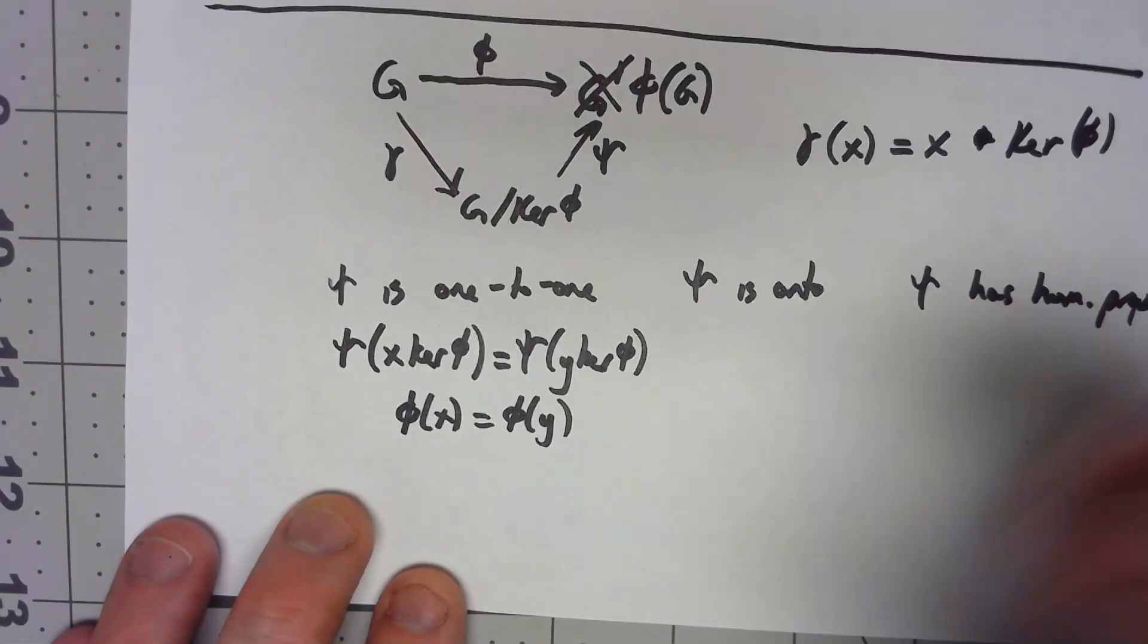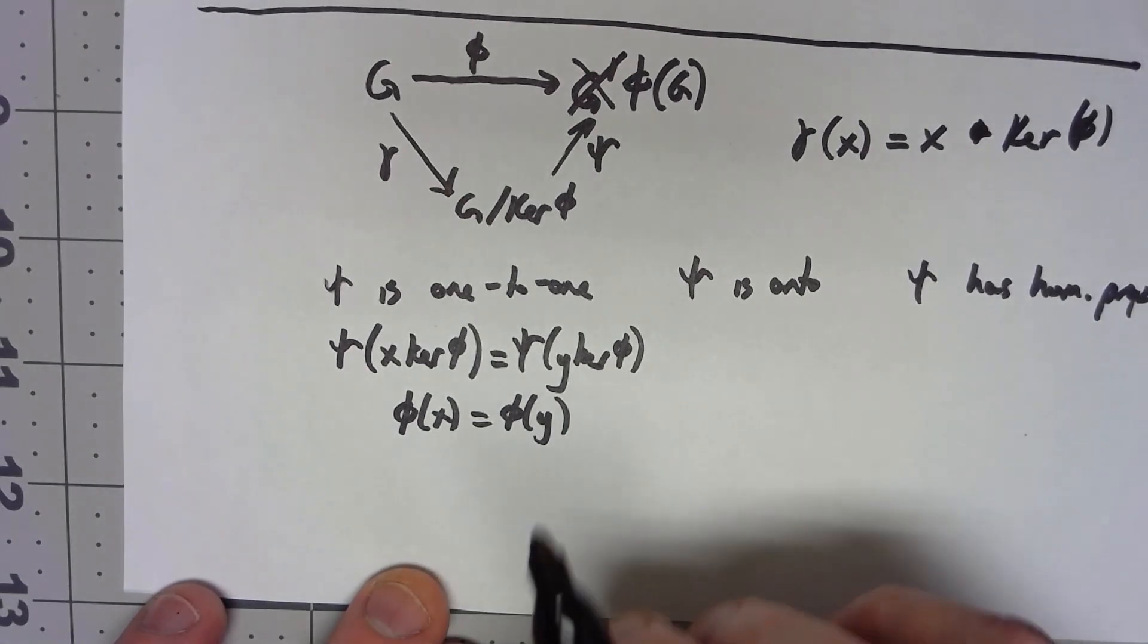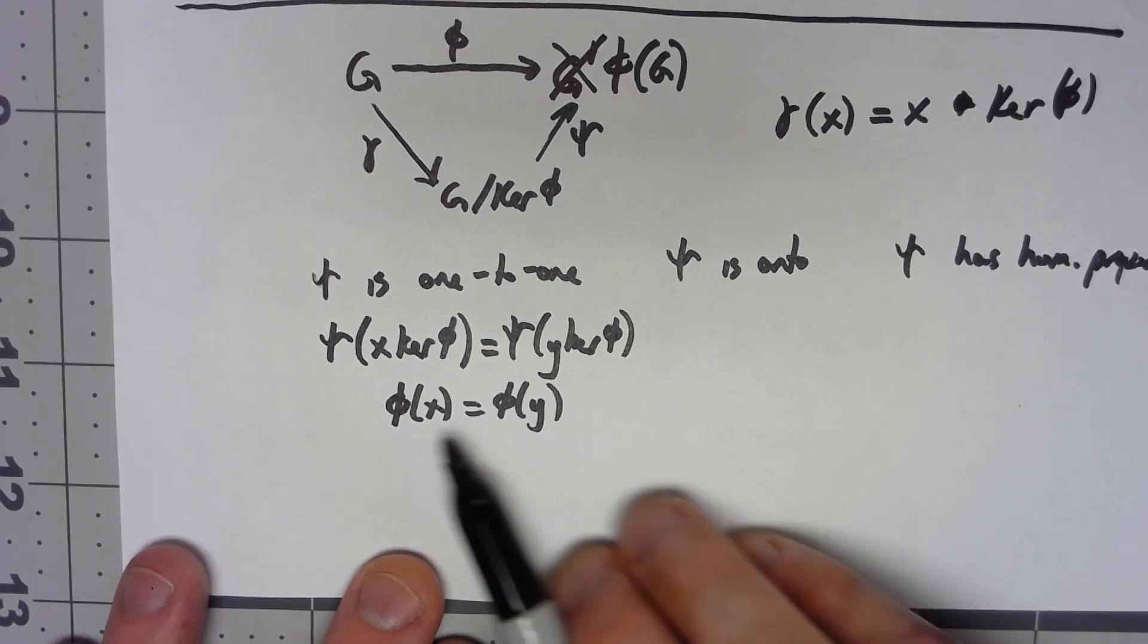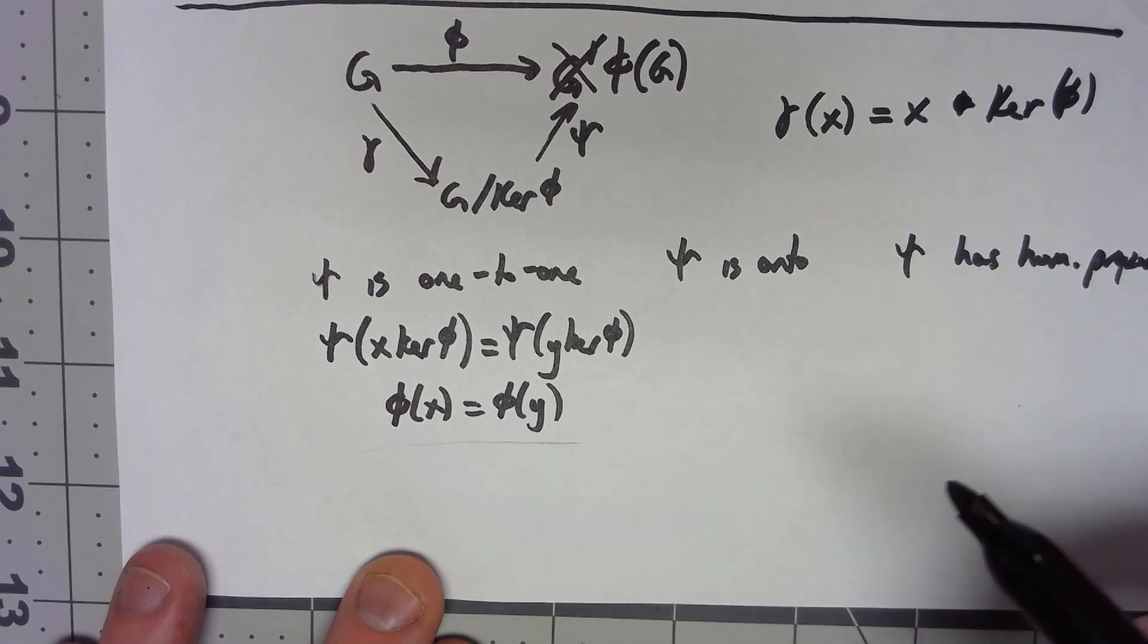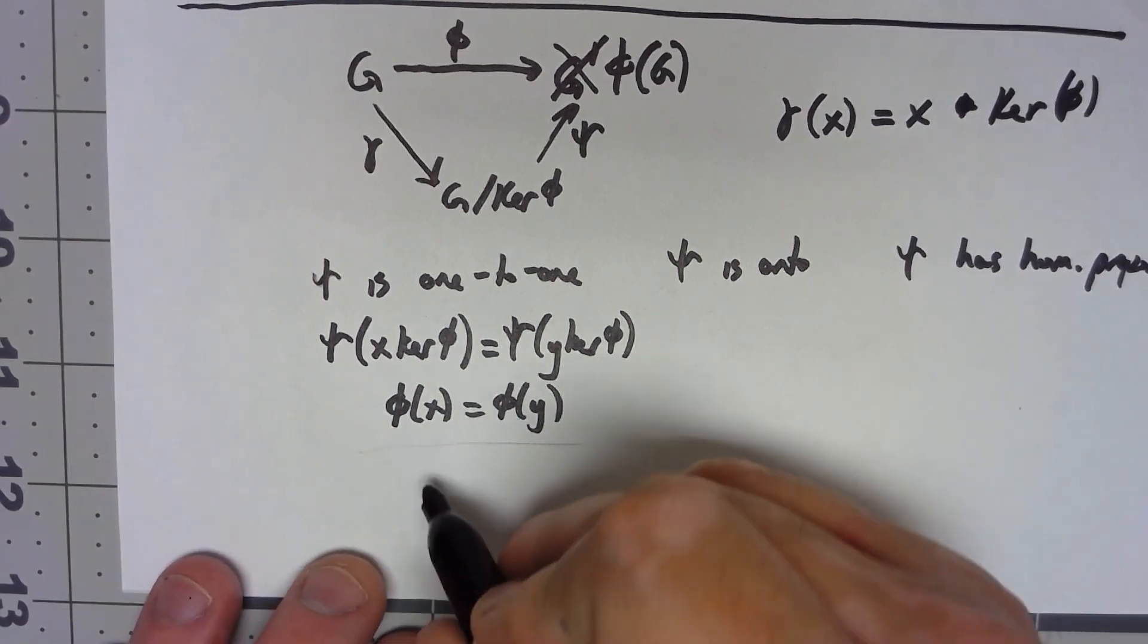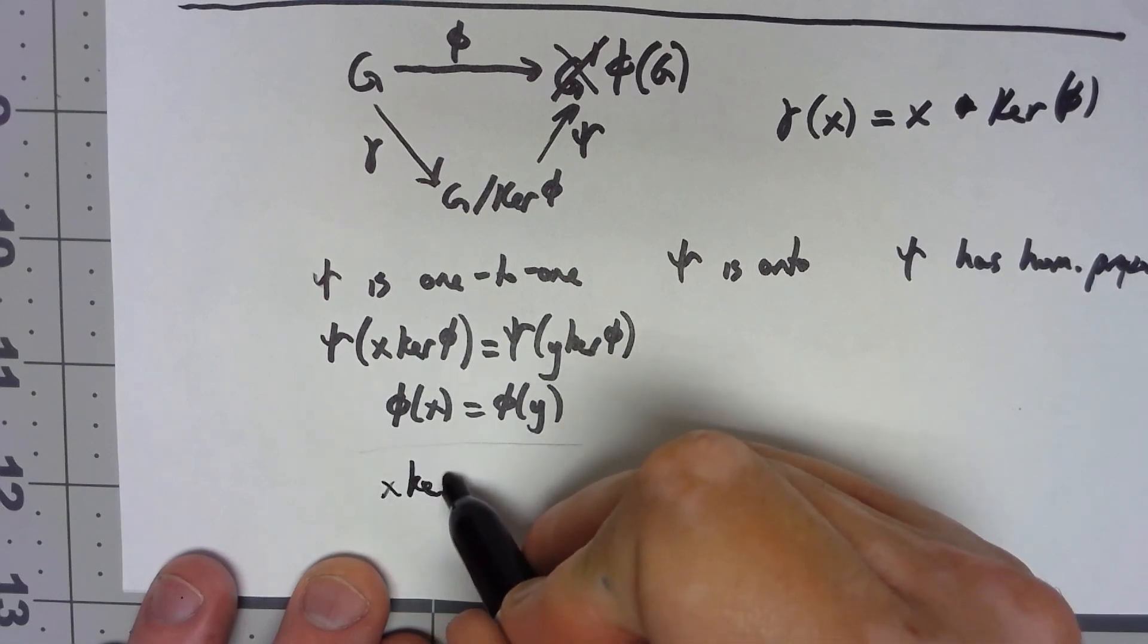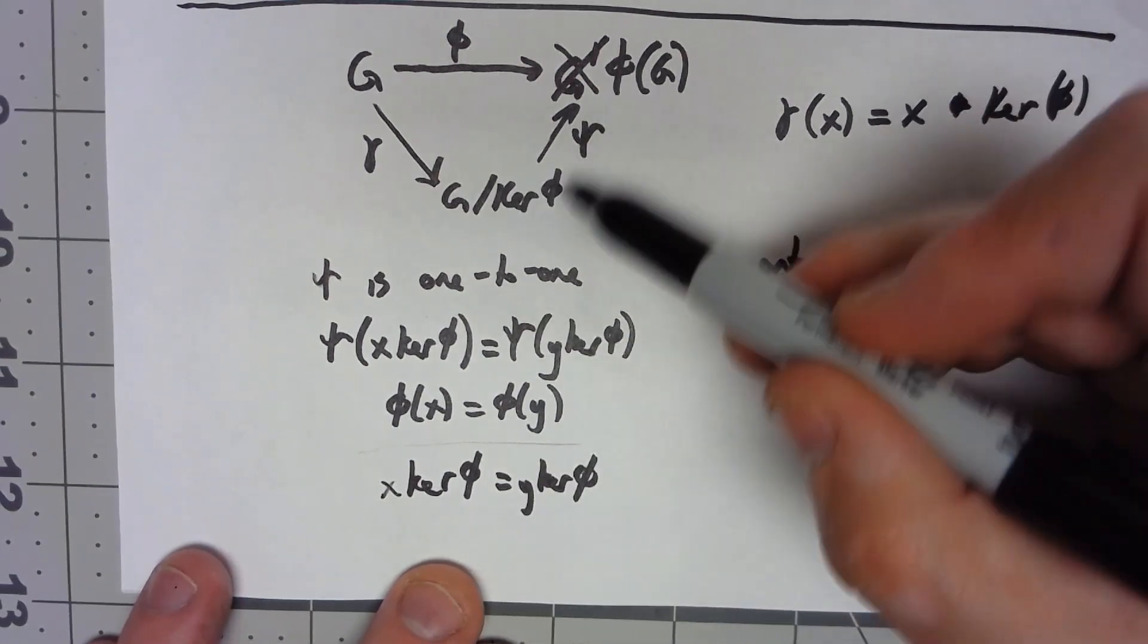Now, this isn't enough to show that phi of x, or that x equals y, because phi is not a one to one map. But that's okay. I don't need x and y to be equal. What I need is for them both to be in the same coset of the kernel of phi. And that is enough to show that they're in the same coset of kernel of phi. So that means that x kernel of phi is the same thing as y kernel of phi. Which is what I need. I need this to be one to one.